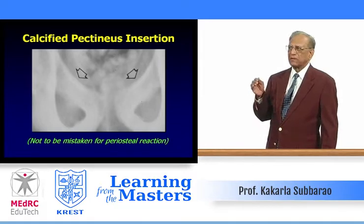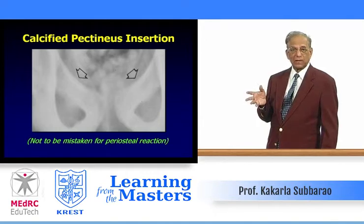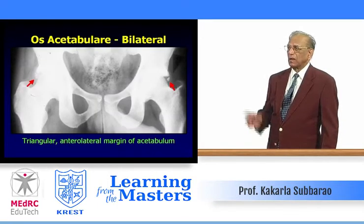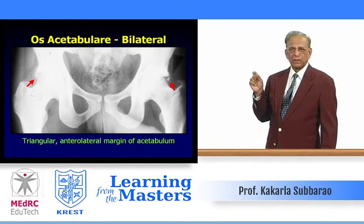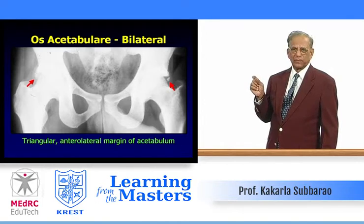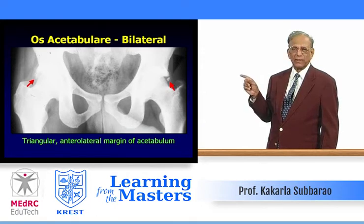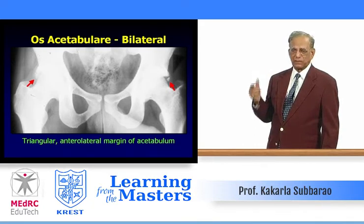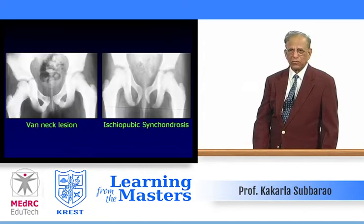A calcified pectineus insertion on the iliopectineal line is often mistaken for a periosteal reaction or even Paget's disease, but this is a normal variation in elderly people. On either side of the hip in the acetabular area, there are small triangular ossicles — these are not detached osteophytes but are called os acetabuli, accessory ossicles, usually triangular, located at the anterolateral margin of the acetabulum.